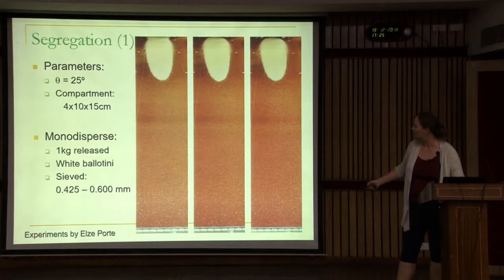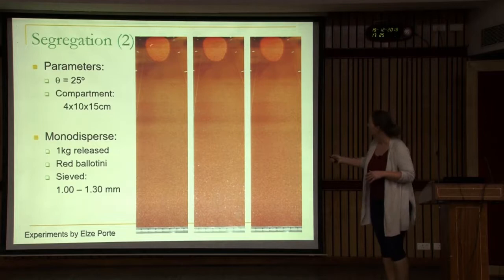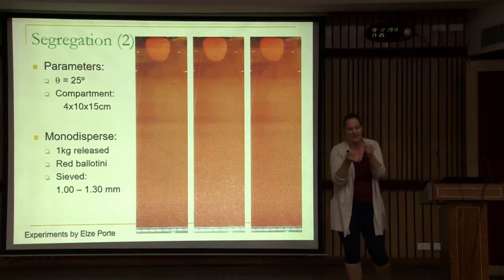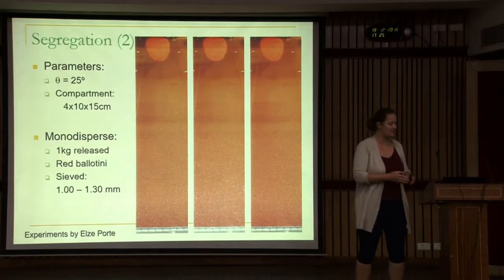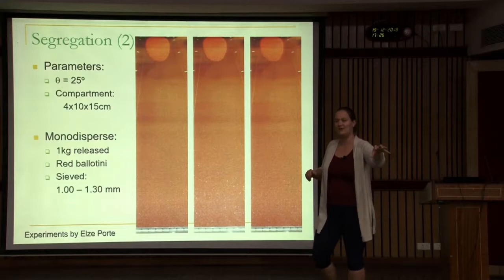Now we change the particles to ones that are one millimeter — for simplicity we also took a different color, so the particles are now red. Same quantity, only two times as big. Because they have a different interaction with the base, they flow differently and don't go as far. Again, we do the experiment three times and it's very repeatable.